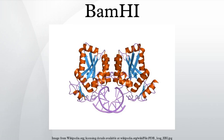The recognition site for BamHI has a palindromic sequence, which can be cut in half for each subunit, showing the bonds at the recognition site. As of the end of 2010, there were five crystal structures of BamHI in the Protein Data Bank.